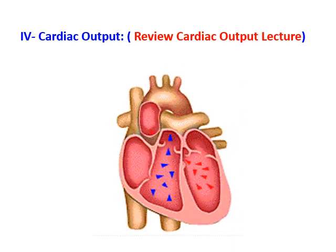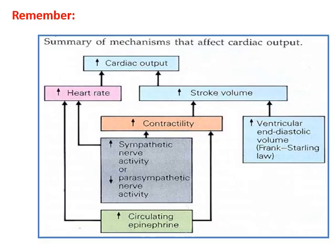Please revise the cardiac output lecture. To summarize: cardiac output is affected by heart rate and stroke volume. Stroke volume is affected by end-diastolic volume and Starling's law, as well as contractility. The heart rate and all factors that affect it should be revised in the cardiac output lecture.